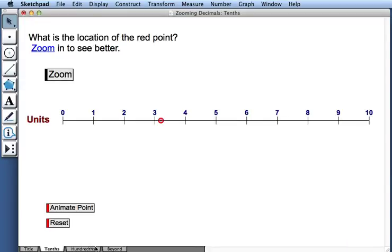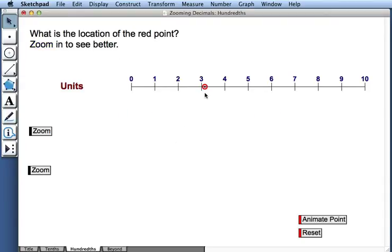When I'm done with tenths, I can move on to hundredths. So what is the location of this red point? To me it looks like maybe about 3 and 2 tenths.